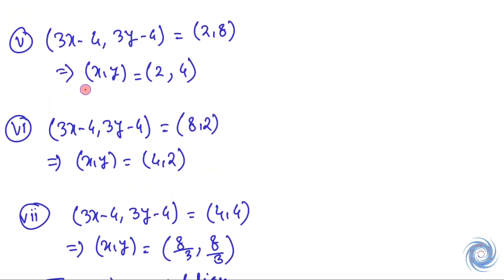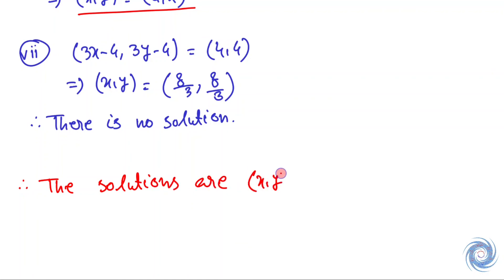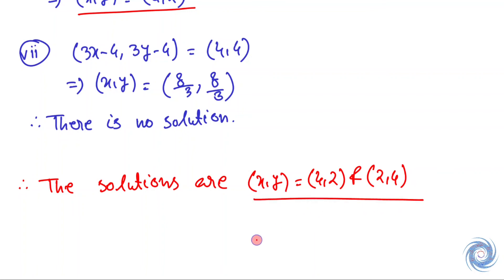Therefore, we have two solutions: x, y equals 2 and 4, and x, y equals 4 and 2. So we are done. Thank you.